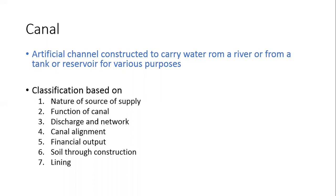Canals are classified based on several criteria: based on nature of water supply, based on the function of the canal, based on the discharge and network, based on canal alignment, financial output, soil through construction, and classification also exists based on the lining.